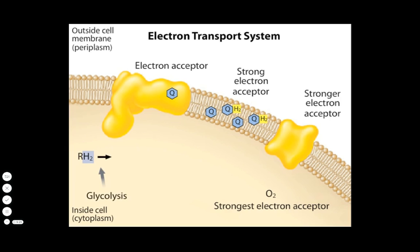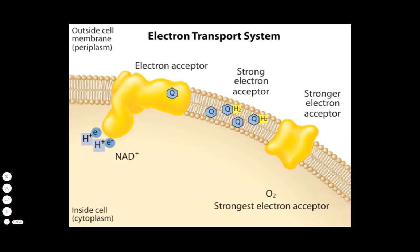During glycolysis and the tricarboxylic acid cycle, organic molecules donate electrons associated with hydrogen atoms to NAD+ molecules. The resulting NADH molecules act as electron donors to the electron transport system.